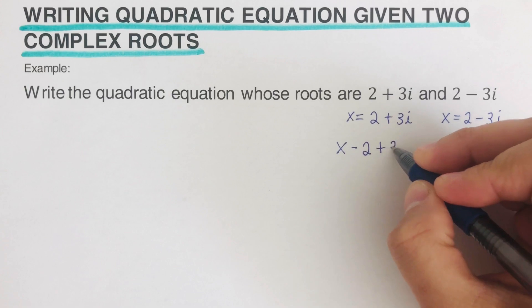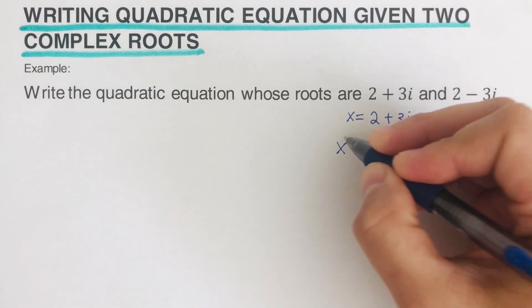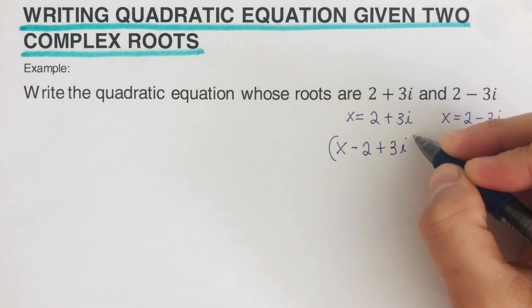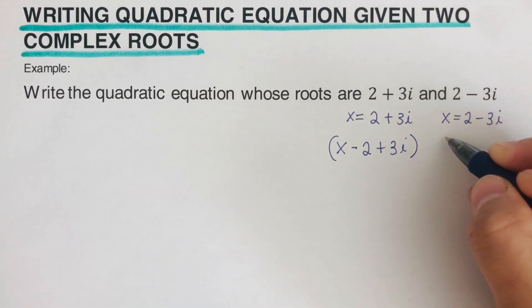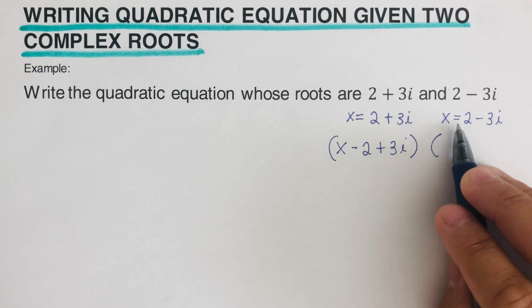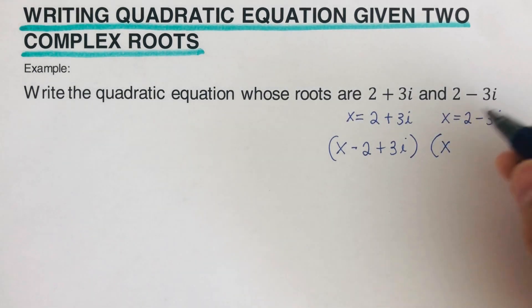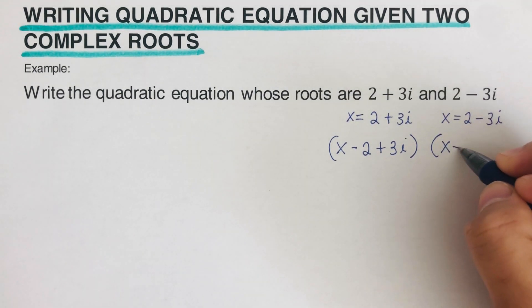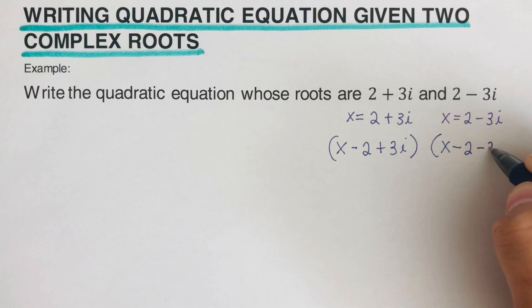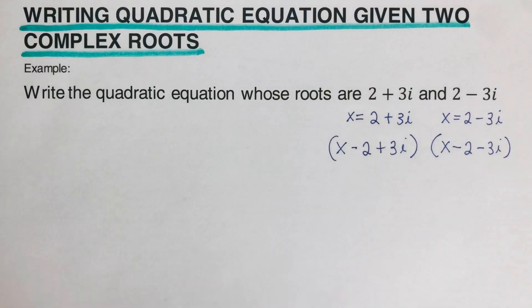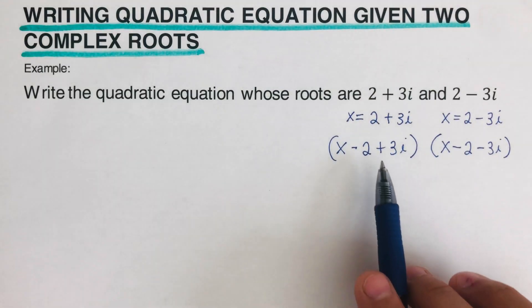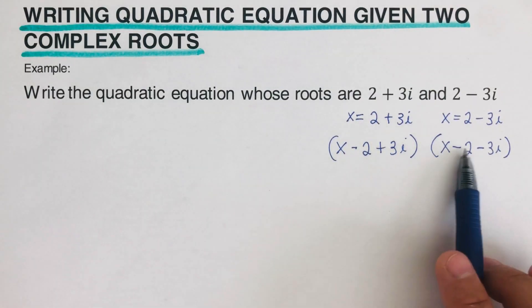Similarly, for the second root we switch the sign of the real part to get (x − 2 − 3i). Now we need to multiply these two factors together.